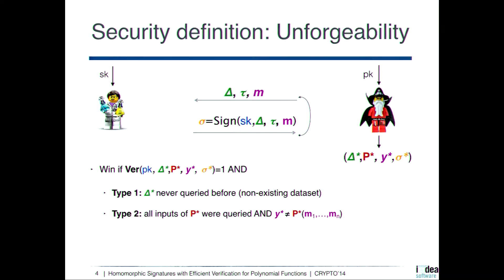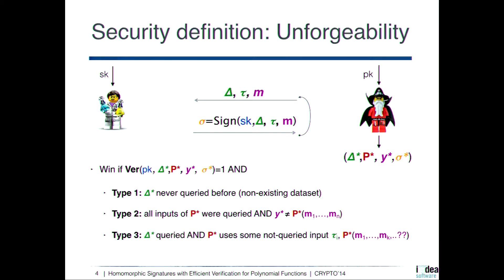The second case is when all the inputs of the program claimed by the adversary were queried during the game, but the output is not the correct one. The third case is when the data set was queried, but some of the inputs of the program claimed by the adversary were not queried during the game — meaning some inputs are missing to the adversary, who should not be able to produce a valid signature for such a program.